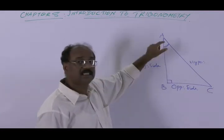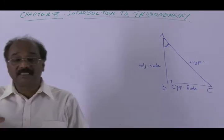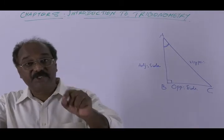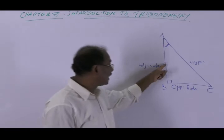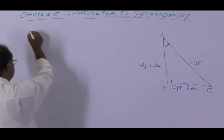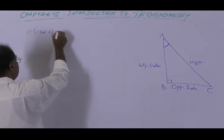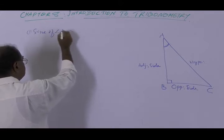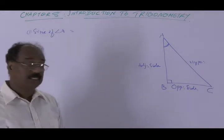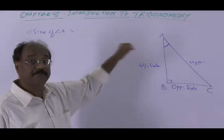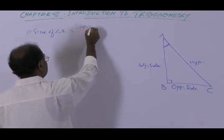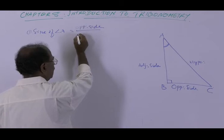With respect to angle A, we will have six ratios, which are the ratios of the sides of this triangle. The first ratio is named as sine of angle A. Sine of angle A is equal to the opposite side divided by the hypotenuse, which is BC divided by AC.